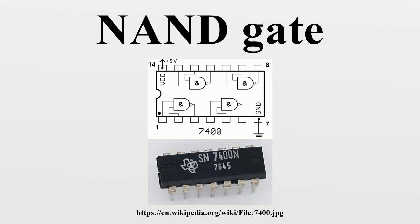In digital electronics, a NAND gate is a logic gate which produces an output which is false only if all its inputs are true, thus its output is complement to that of the AND gate. A low output results only if both the inputs to the gate are high; if one or both inputs are low, a high output results. It is made using transistors.